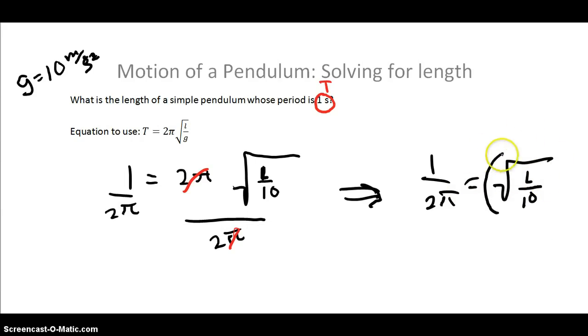Now if you square both sides, I'll get rid of the square root on this side, which is what we're trying to do. And we'll be left with 1 over 4π squared is equal to the length over 10.